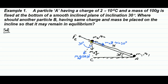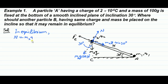The normal reaction of the plane on the block is opposite to M2G cos 30°, that is, normal to the plane. It is N. In equilibrium, N will be equal to M2G cos 30°. And the electrostatic repulsion Fe is equal to M2G sin 30°.